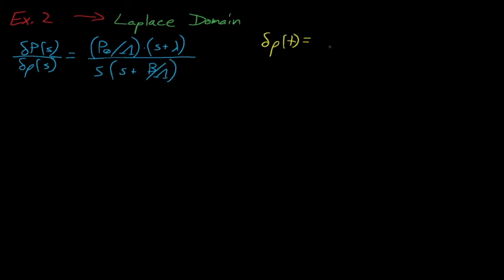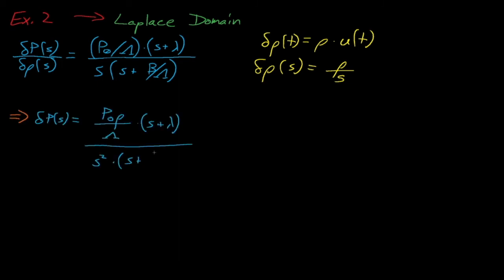Solving this example problem is significantly easier in the Laplace domain. Our step reactivity insertion is equal to some rho divided by s in the Laplace domain, and after we combine this reactivity insertion with our reactor transfer function, we obtain this expression for delta p as a function of s. When we decompose this expression into partial fractions, we see that we'll have an a divided by s squared term plus b divided by s plus c divided by s plus beta divided by lambda.